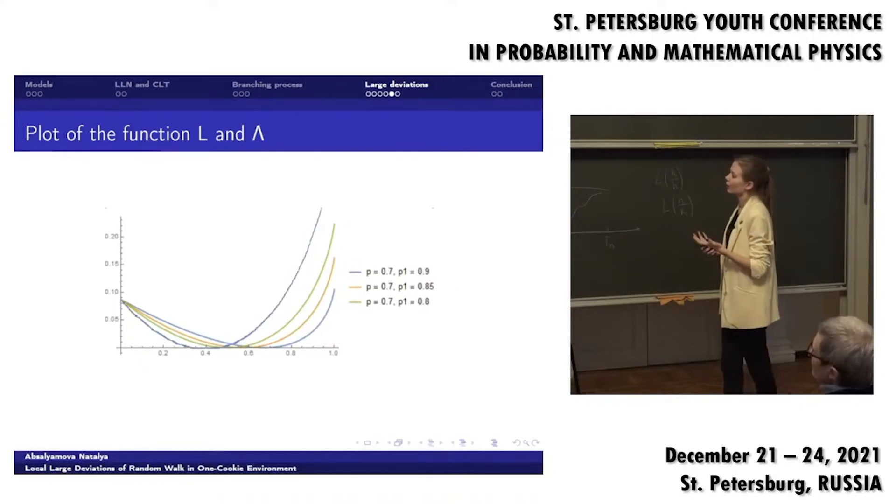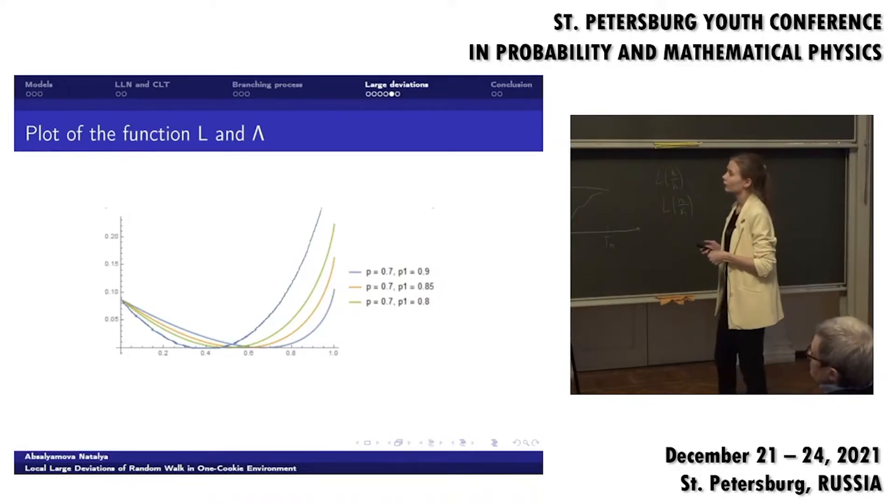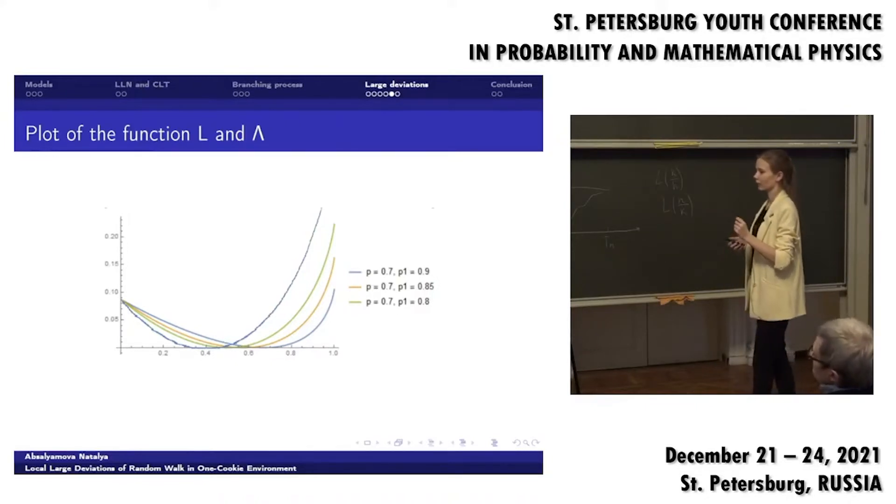Moreover, we can compare this result with simple random walk. The new false plot is for simple random walk with parameter 0.7, I think. Yes. And we can see that for quite a big probability of cookie, there is a big effect of it. And we can see that we have two large deviations.